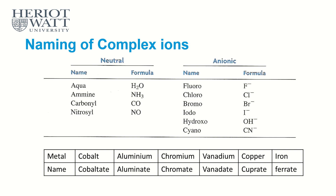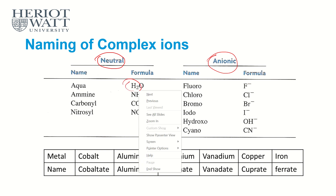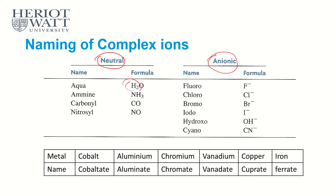We can have monodentate, bidentate, and polydentate ligands. Now let's look at the table given here. We have neutral ligands and anionic ligands — anionic means they have a negative charge. For neutral ligands: water is called aqua, ammonia is called ammine, CO is carbonyl, and NO is nitrosyl. Those are the names of the neutral ligands.